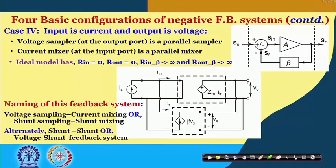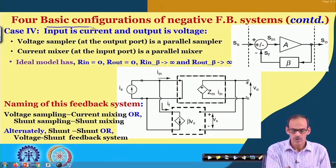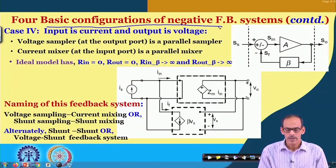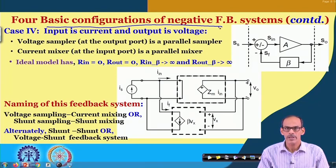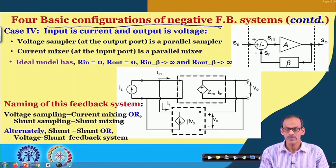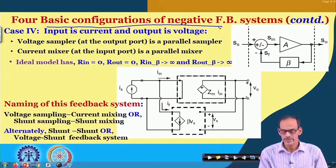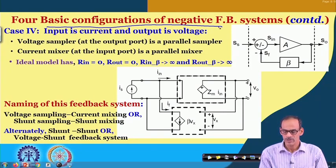Dear students, welcome back after the break. Before the break we were talking about four basic configurations of negative feedback systems, and we have seen the change of system gain due to negative feedback and talked about the desensitization factor. Now we are going to talk about the effect of the feedback system on input resistance and output resistance, as I gave a hint in the previous part of this lecture.